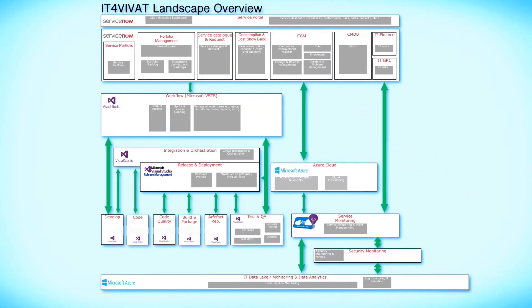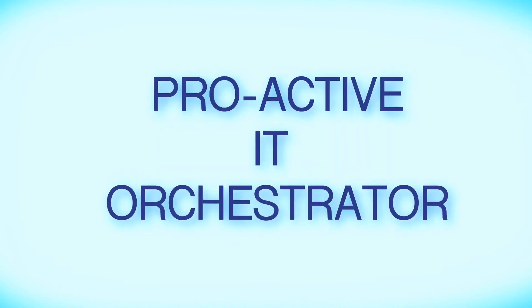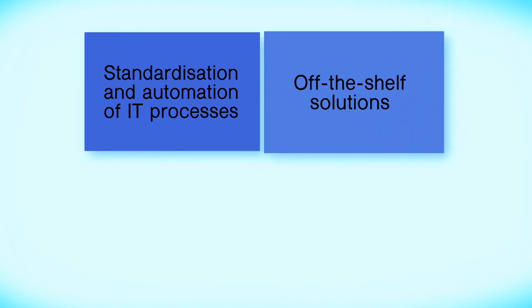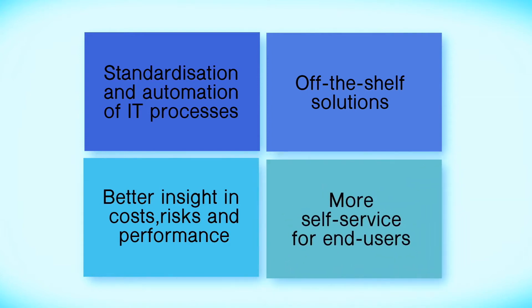VIVAT wants to evolve from a reactive IT service provider into a proactive IT orchestrator and initiated a transformation project to accomplish this. In other words, standardization and automation of IT processes using mainly off-the-shelf solutions and combining them intelligently rather than developing in-house. Better insight into costs, risks and performance and more self-service for end users.